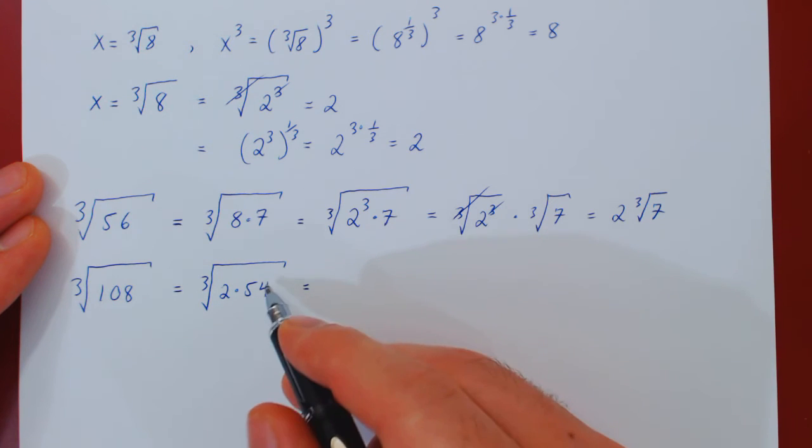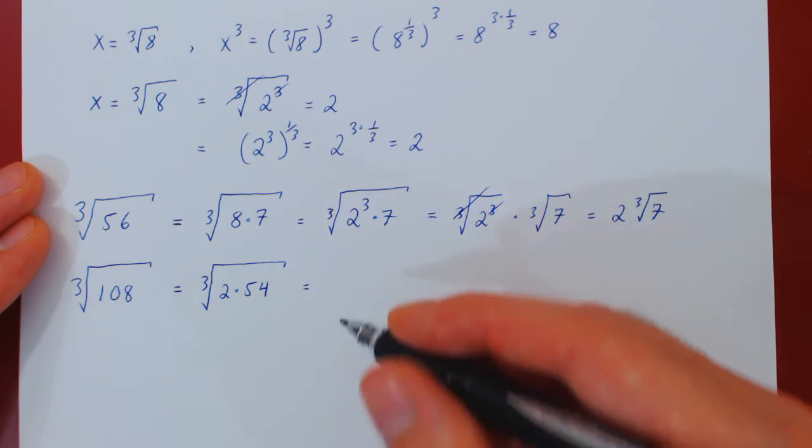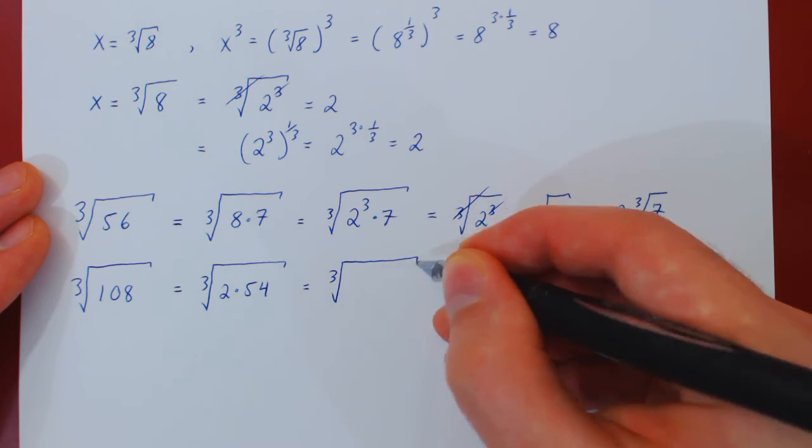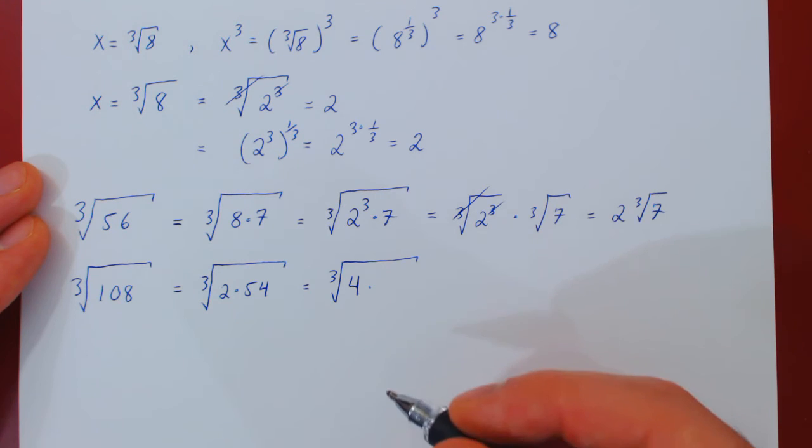But 54 again is an even number, so we can also factor 2 from this again. So we have the cube root of 2 times 2 is 4. And if you factor 2 from 54, well, you get 27, as 2 times 27 is 54.